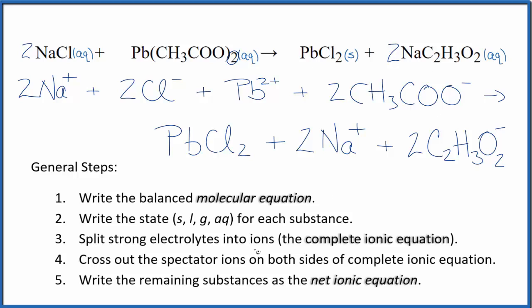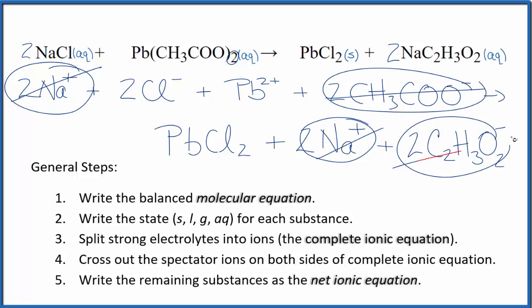Now we can cross out spectator ions. They're on both sides. In the reactants here, I have 2 sodium ions. In the products, I have 2 sodium ions. These are spectator ions—we can cross these out. And then, even though I've written them differently, these are both acetate ions. We have 2 of them in the reactants and the products. Spectator ions. We cross those out.